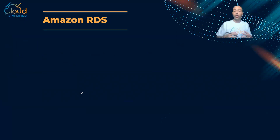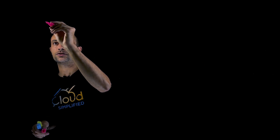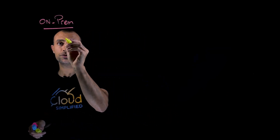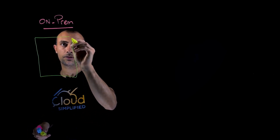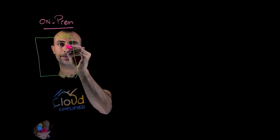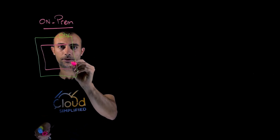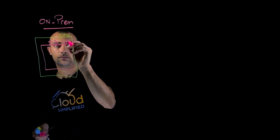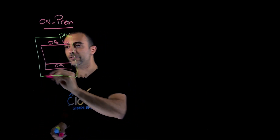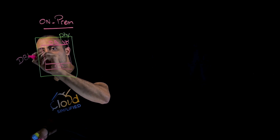Now let's see the AWS offering called Amazon RDS. Starting on-premise: you have your physical data center, your physical servers, and inside those physical servers you have a database virtual machine. That virtual machine has an operating system managed by a database administrator.